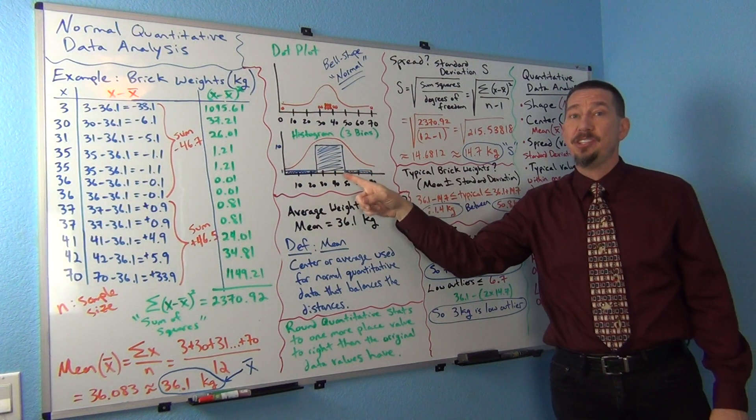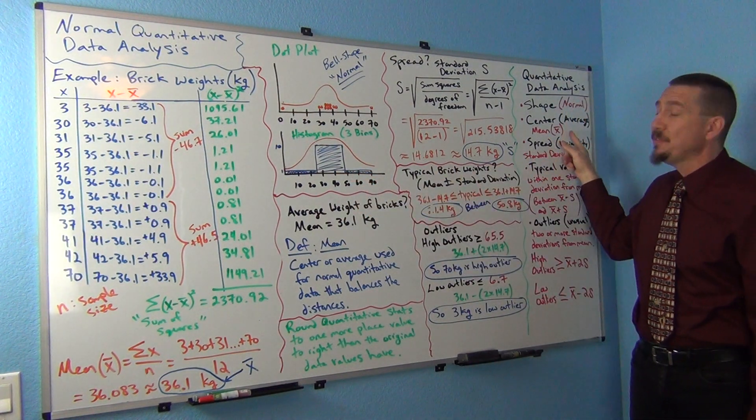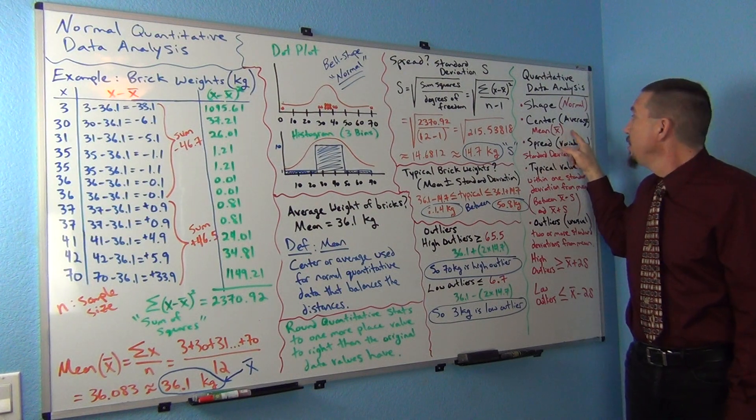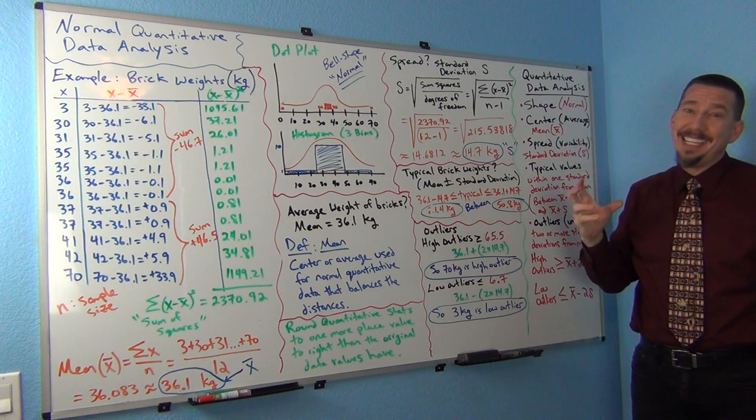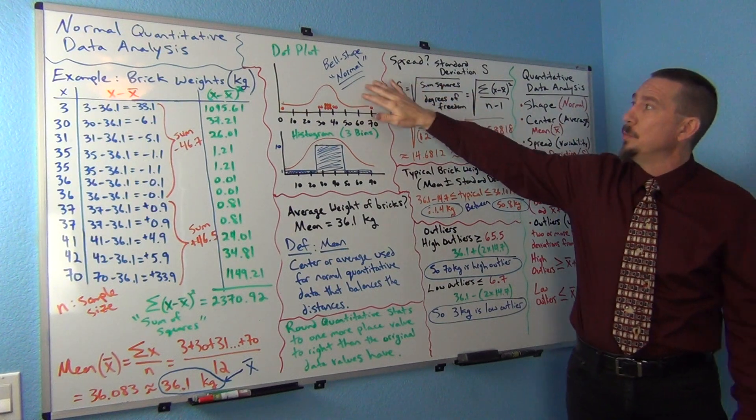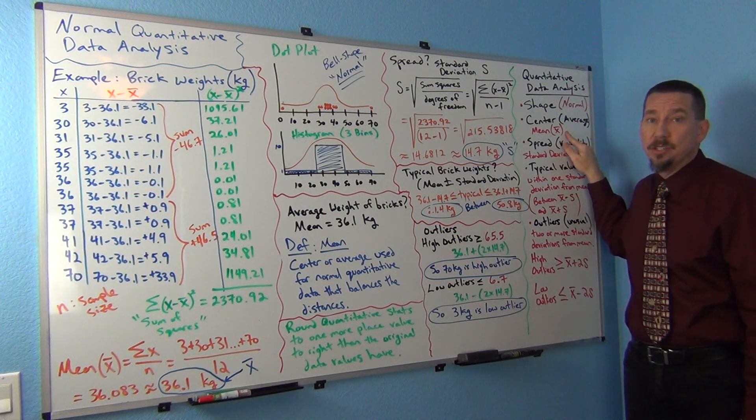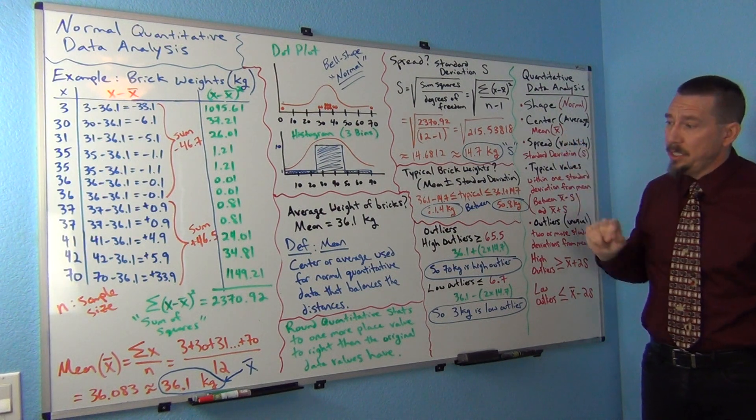But it's actually only accurate when the data has this shape. When the data does not have this shape, we actually want to stay away from the mean. We don't want to use the mean because it's not a very accurate average. So that's one of the big keys here is that the mean goes with normal. So when a data is normal, then you're allowed to use the mean as your average. So let's calculate the mean.